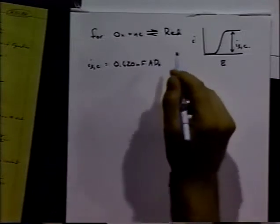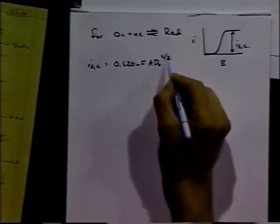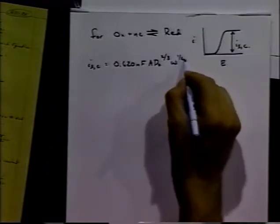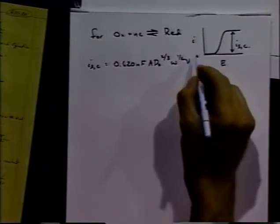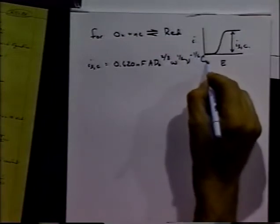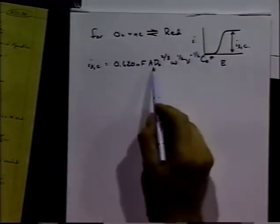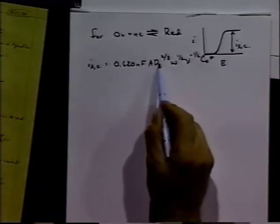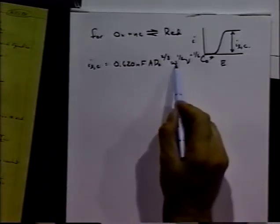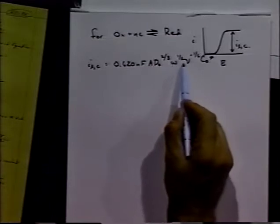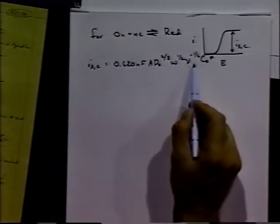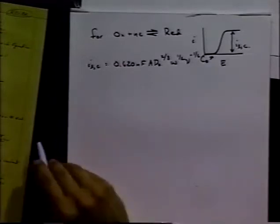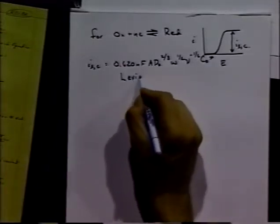So the limiting current in that case, for oxidized molecule initially present, would be 0.620 NFA—they've collected some of the constants in the system. That's N, F, area of the electrode, diffusion coefficient of oxidized molecule, rotation speed to the one-half power (angular velocity to the one-half power), kinematic viscosity to the minus one-sixth power, times the concentration. This equation is called the Levitch equation, named after Levitch who derived it originally.